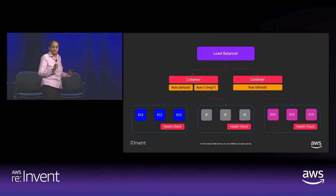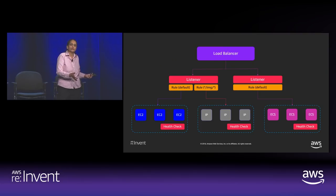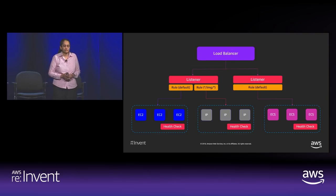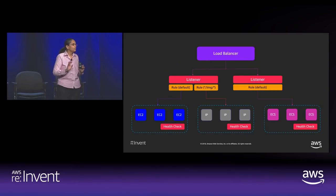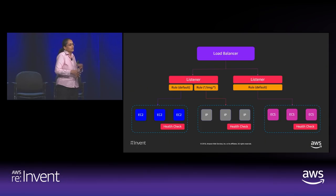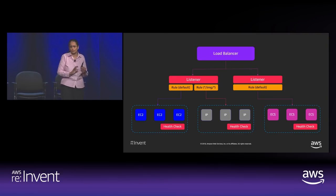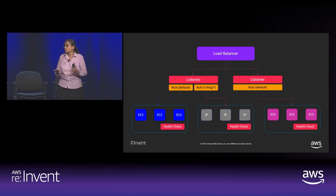You configure health checks on the target group, and you can associate auto-scaling to target groups and scale them individually. The targets themselves can be EC2 instances, IP addresses, or containers, and you can register a target to multiple target groups using different source ports. You can have up to 100 target groups per load balancer and 3,000 targets inside a target group — all soft limits. If your architecture goes beyond these limits, please talk to us and we can increase them.